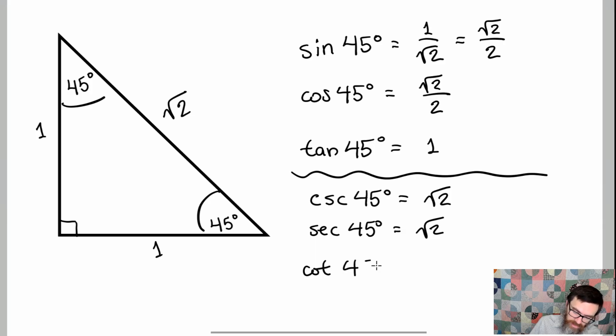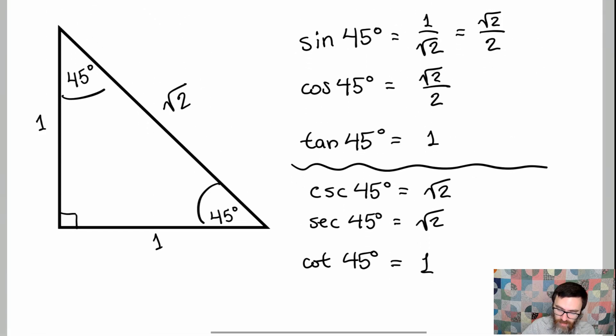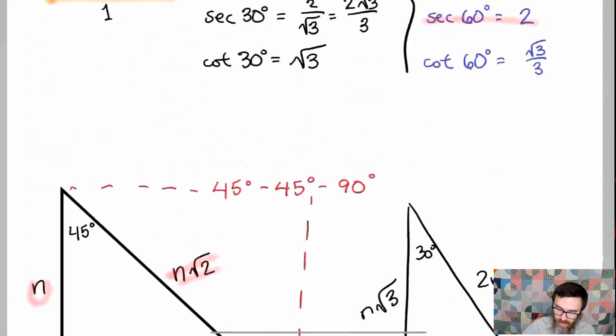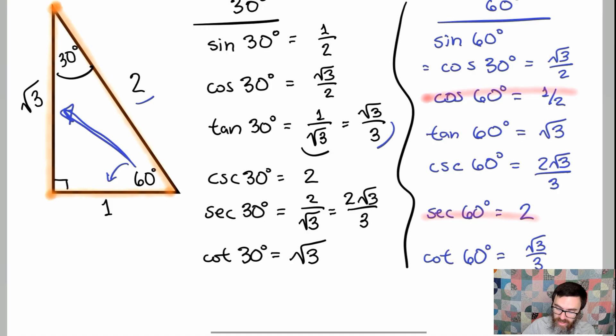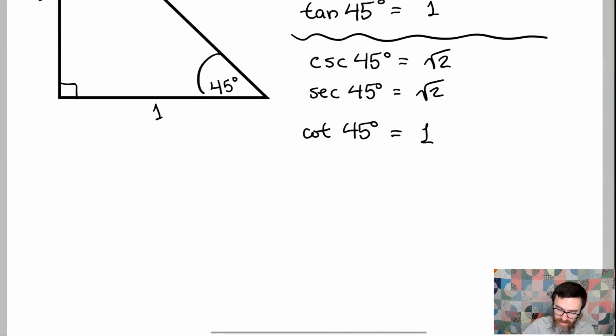And for the cotangent, the cotangent is going to be the reciprocal of 1, and that's just 1. Alright, so if we put all this together in a table, right, all these values that we have here, plus all the ones we have from the previous video, here's what we're going to be looking at.